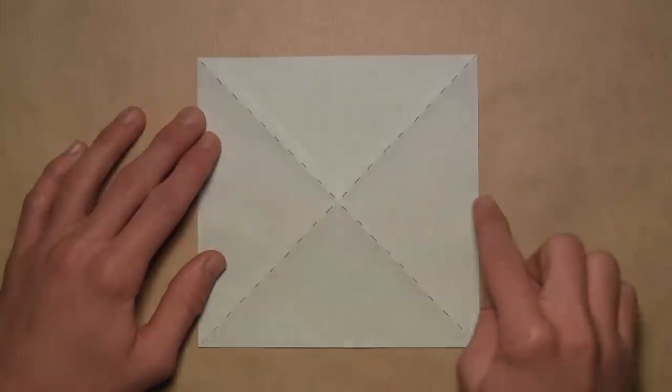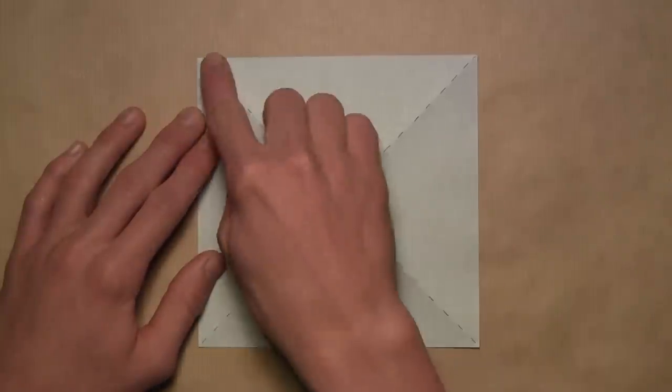And now we're going to rotate the paper so that the crease we just made is now held vertically. We're going to take this bottom edge and fold it up to the top edge.